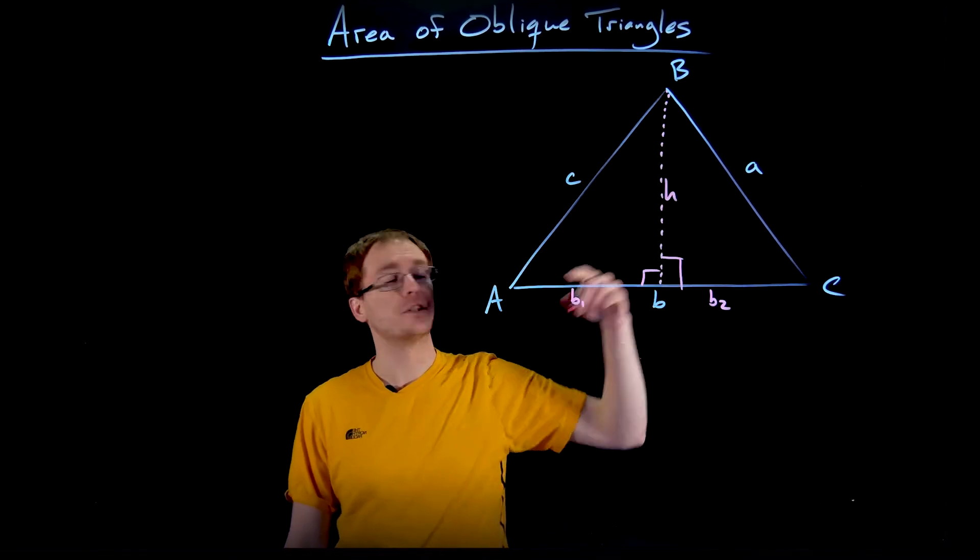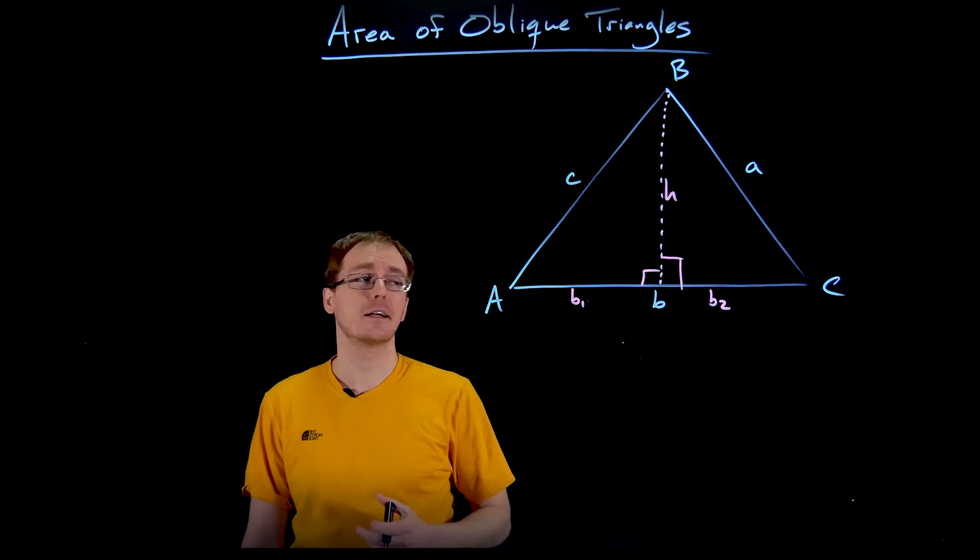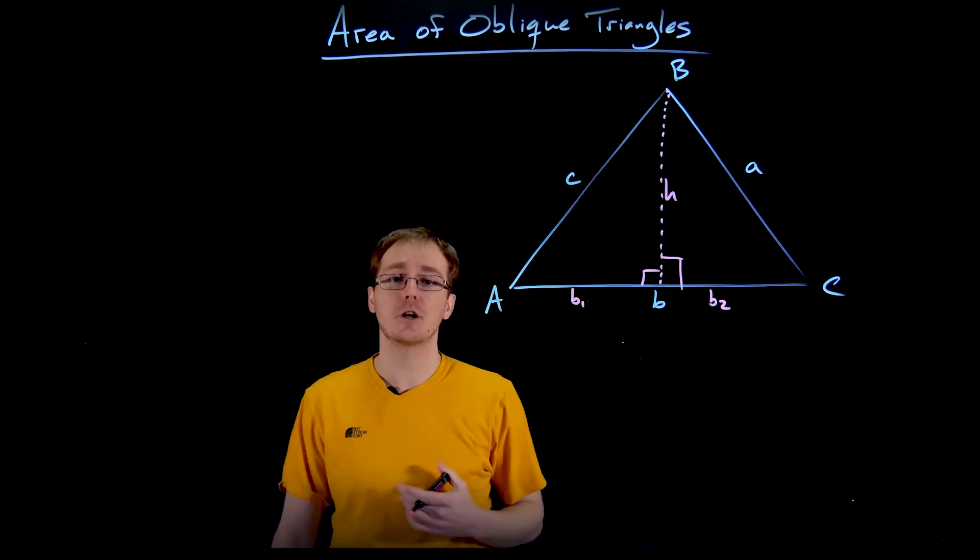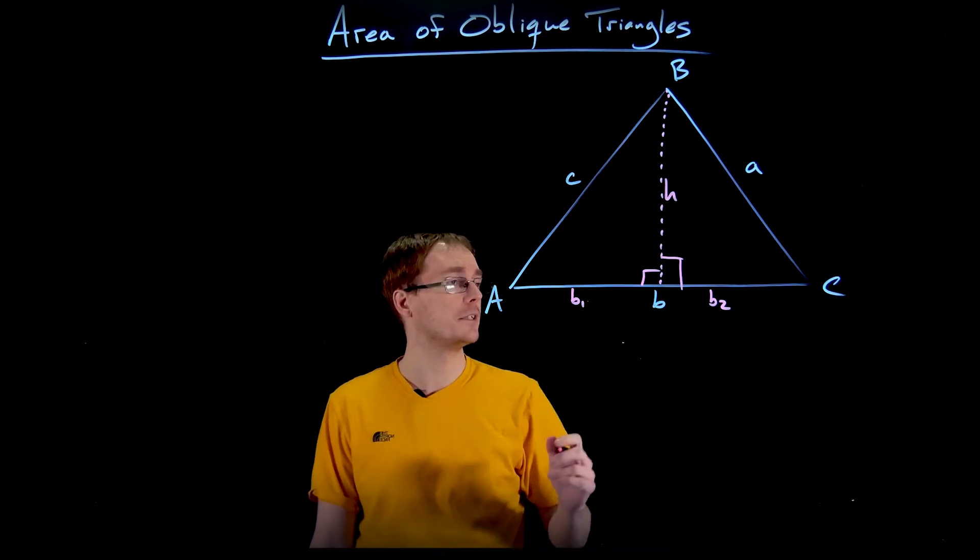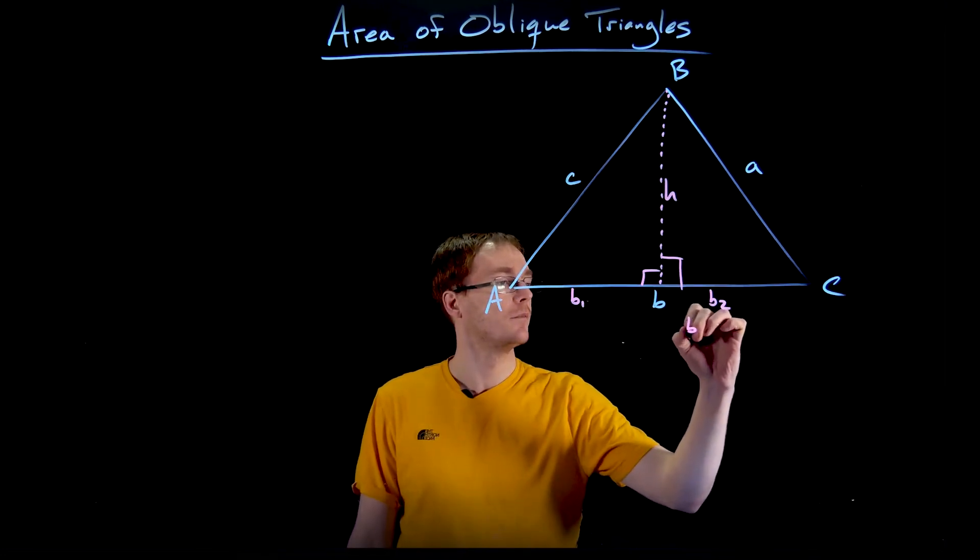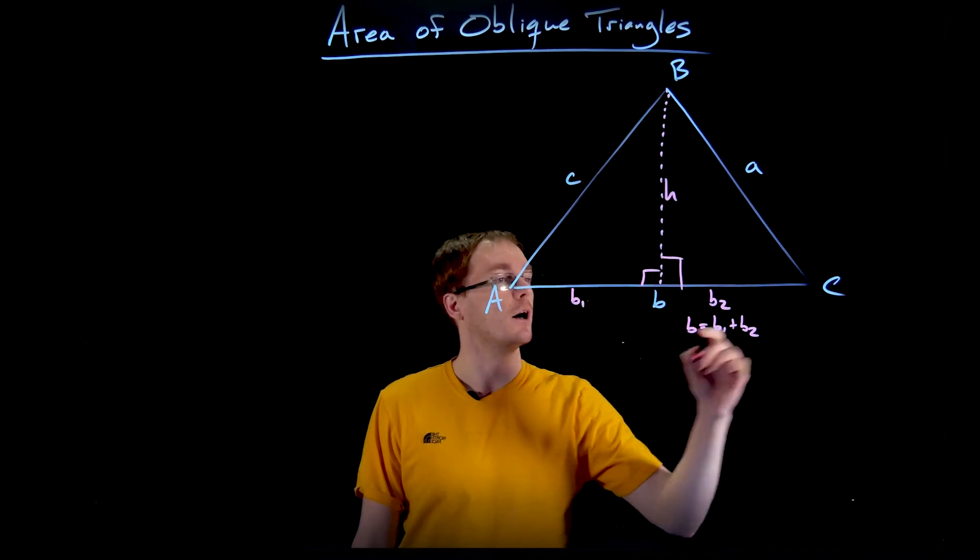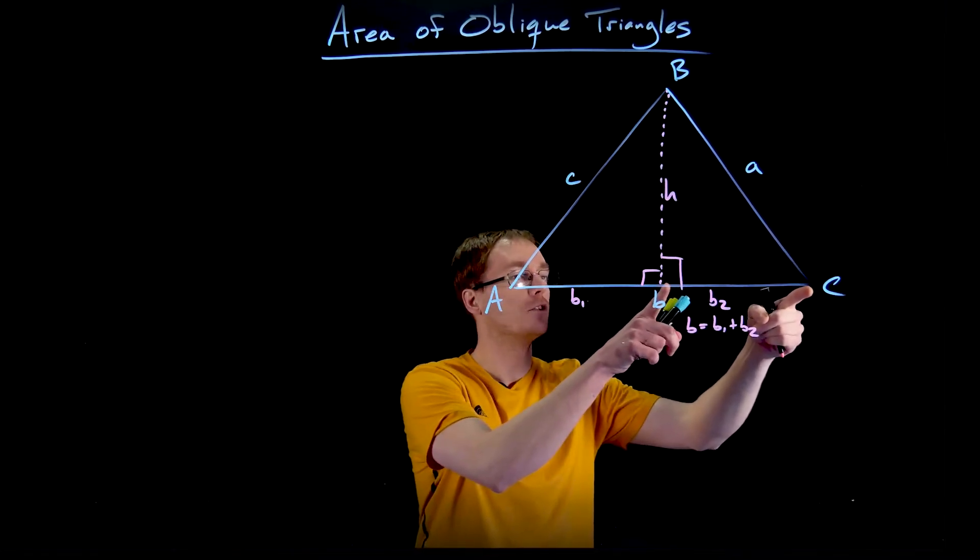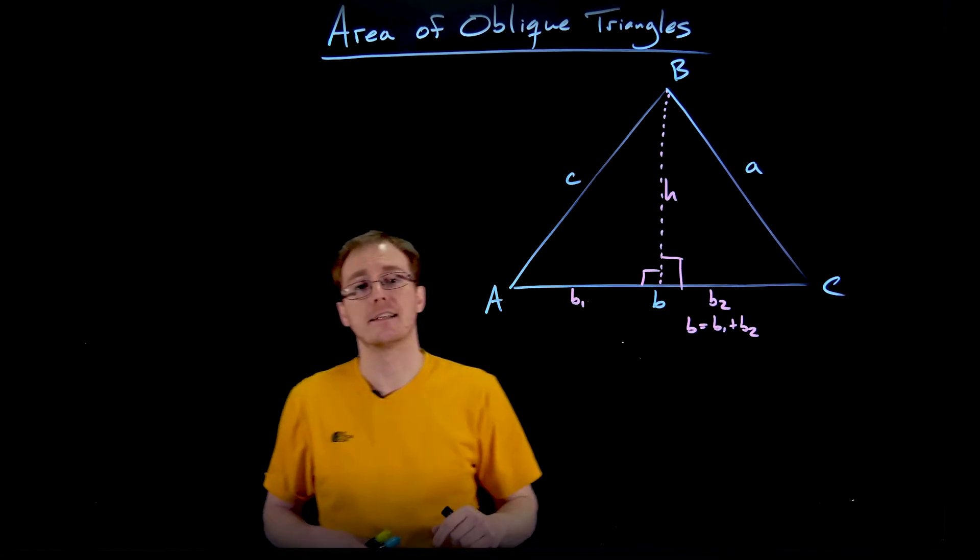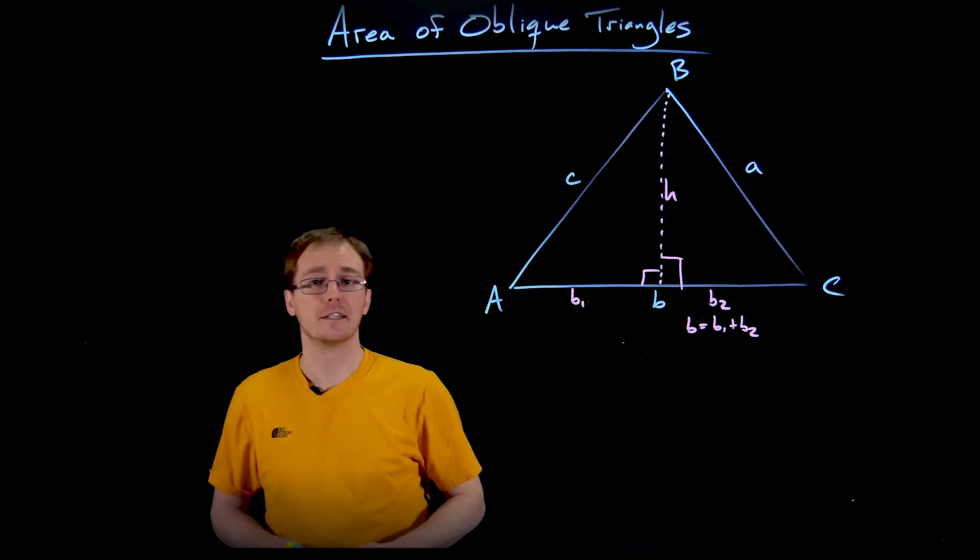Let's go ahead and say that common side length between our two right triangles is H like the height of our triangle and the two bases of our small right triangles are B1 and B2. And notice that B is going to be equal to the sum of B1 and B2, right? Just add this B1 length to this B2 length and we get our entire base length, that original blue quantity that we call B.